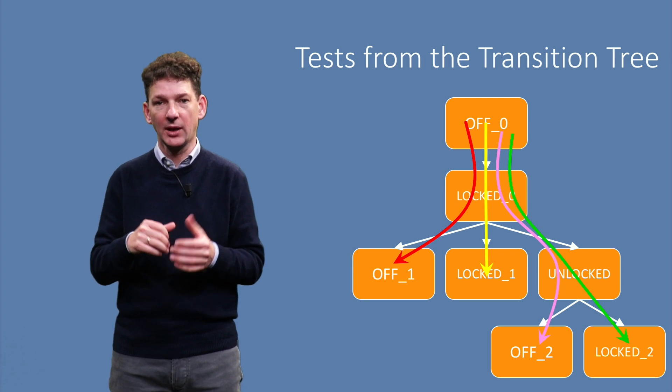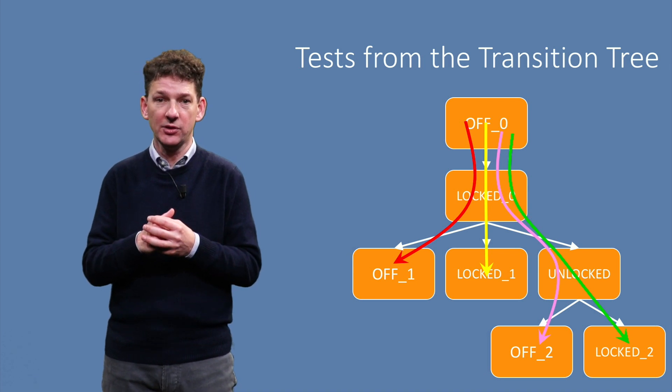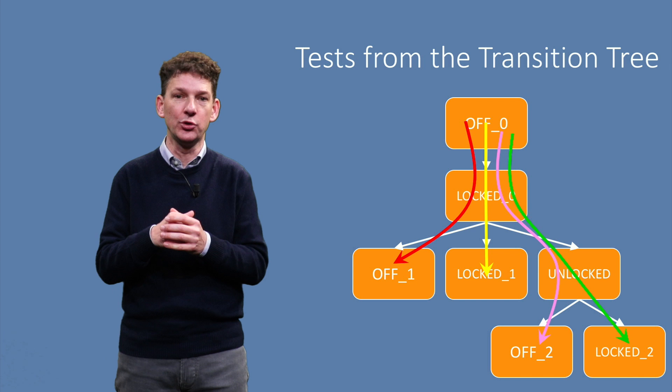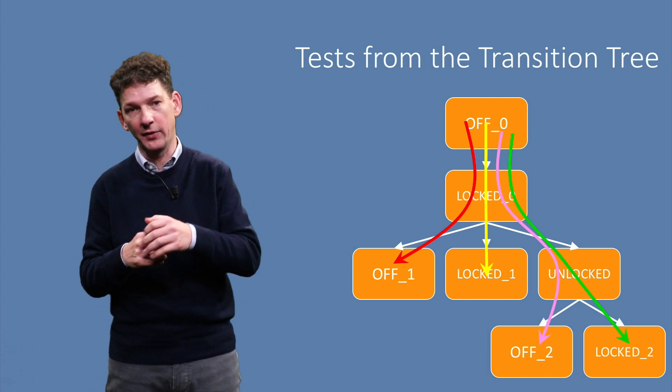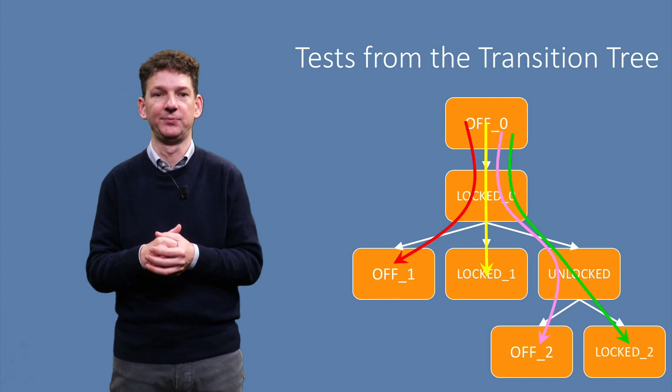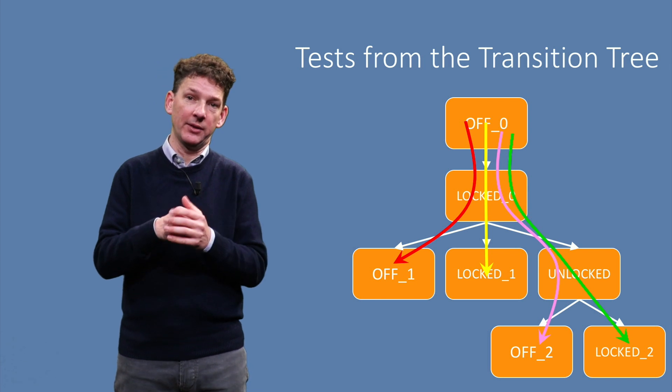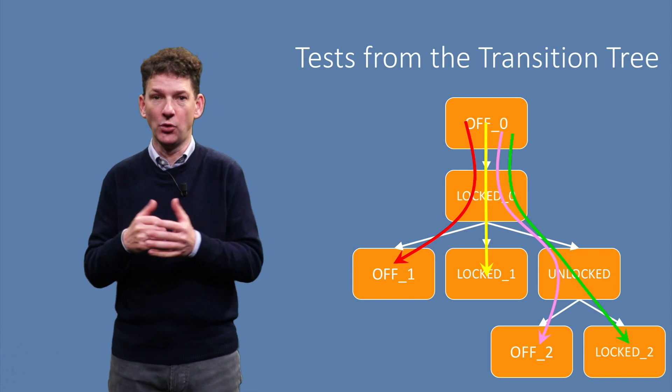For example, the red path gives the simplest test case, corresponding to switching the phone on and off again without unlocking it. The test path that also does the unlocking is drawn in pink.